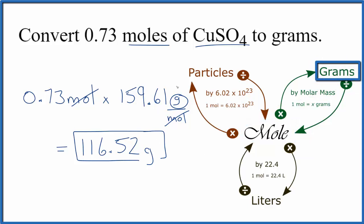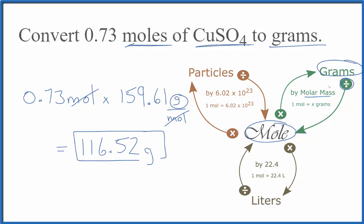If we were given grams of CuSO4 and asked to find moles, we'd do the reverse. We'd start with grams, then we would divide by the molar mass, and that would give us moles. This is Dr. B converting moles of copper 2 sulfate (CuSO4) to grams. Thanks for watching.